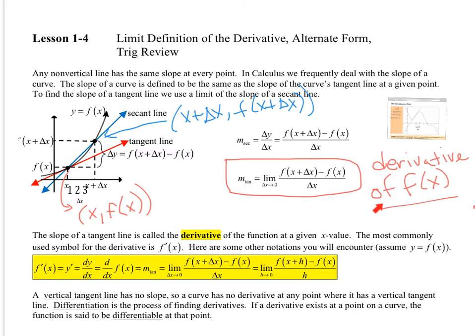The derivative of f of x at a given x value is most commonly written as f prime of x. Other notations include y prime, dy/dx — which is change in y over change in x — and the derivative of f of x with respect to x. We also have the slope of the tangent line definition using the slope and the limit, and another form using h, which is similar to the graphical form shown earlier.